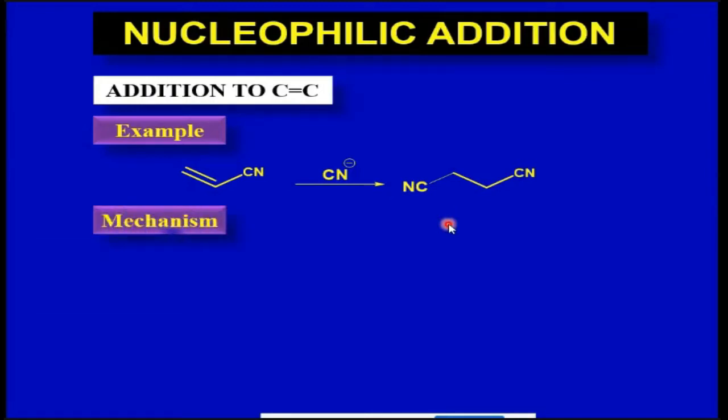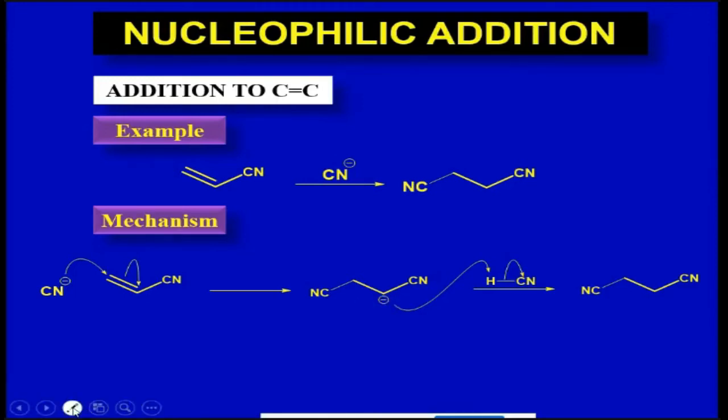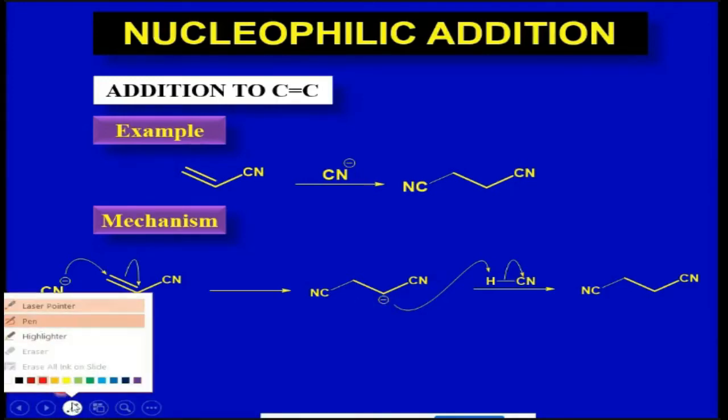The mechanism for the reaction is exactly the same as we discussed in the previous slide. The cyanide group attacks here and we have the formation of a carbanion intermediate. This carbanion intermediate is stabilized by the electron withdrawing nitrile group.